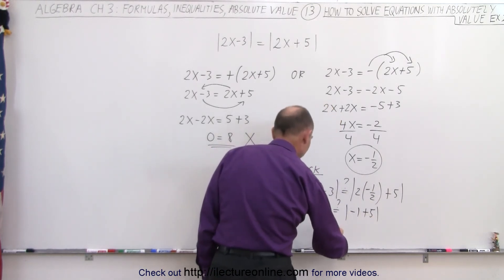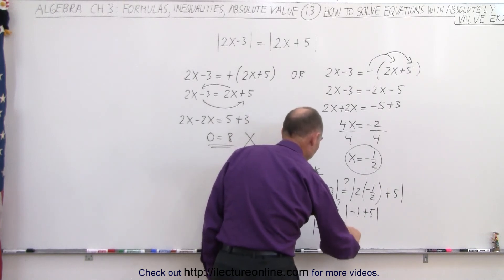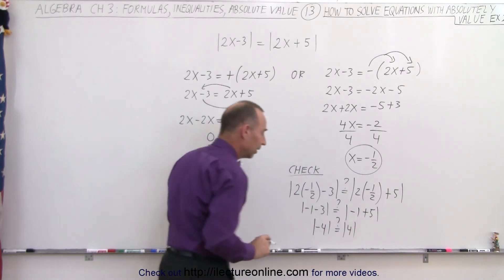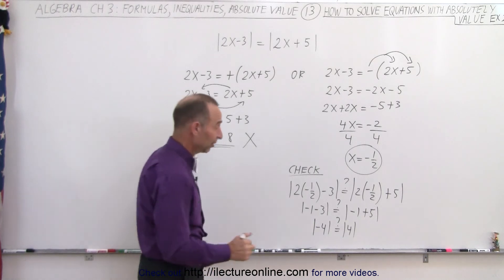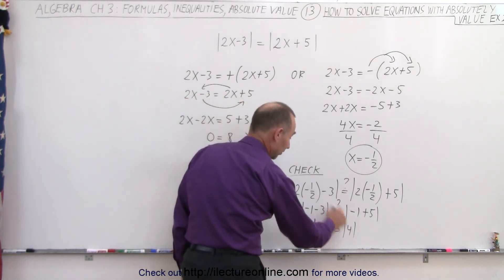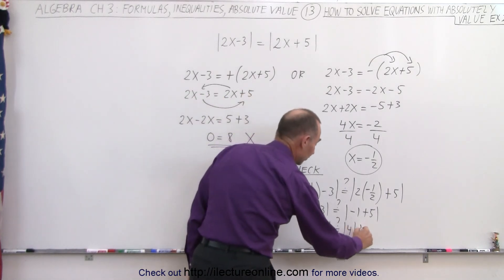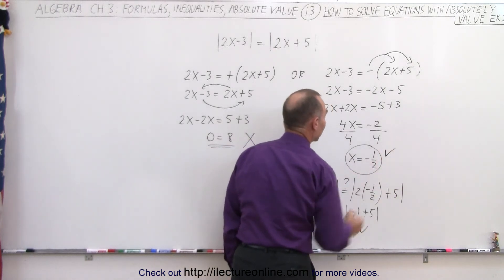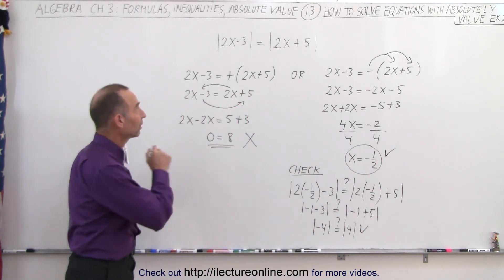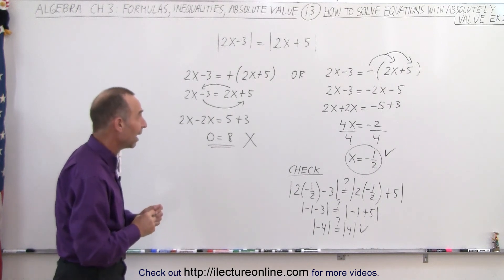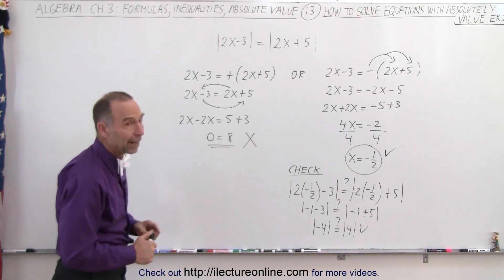And the answer is, of course, that's equal, because the absolute value of a negative number is its equivalent positive number. So that's correct, and we found one solution for that equation: x equals negative one-half. The other one does not pan out,